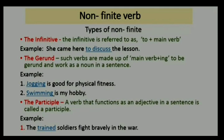A gerund is a verb form made of verb base plus -ing, which works as a noun in a sentence. Example: 'Jogging is good for physical fitness,' 'Swimming is my hobby' — here 'jogging' and 'swimming' function as nouns but are called gerunds. A participle is a verb that functions as an adjective in a sentence. Example: 'The trained soldiers fight bravely in the war' — 'trained' is a verb functioning as an adjective, so it is a participle.